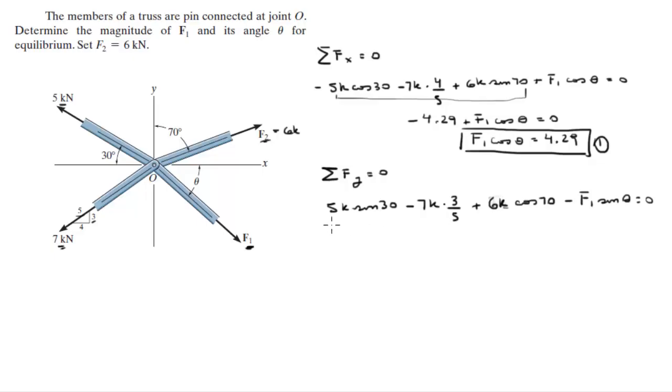So when you plug all this in to your calculator, you're going to get that this is equal to 0.352 minus F1 sine of theta is equal to zero. So 0.352 is equal to F1 sine of theta, and this is going to be my formula 2.